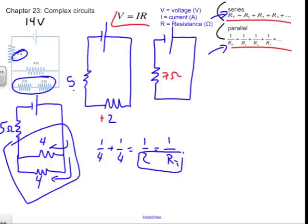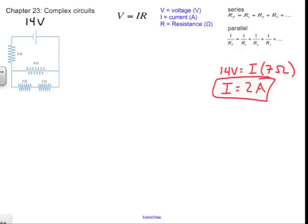With 14 volts and a total resistance of 7 ohms, I apply Ohm's law: 14 = I × 7, so the total current is 2 amps. All 2 amps must travel through the series portions of the circuit — through the 5-ohm resistor and the main wire. It's like water in a pipe: you can't lose any along the way.